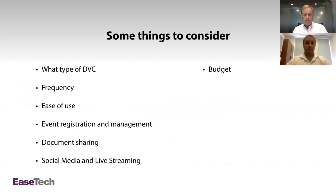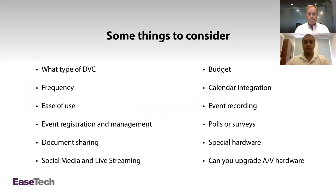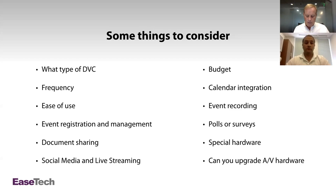There are lots of considerations when evaluating software and hardware for desktop video conferencing. There are three different types: one-on-one, group meetings, and one-to-many like a webinar. When evaluating what you need, think in those terms — maybe you need all three. We've had customers talk to us about wanting to do more interviews, so investing in a high-end system may not be necessary if you're just doing simple one-on-one interviews. Frequency is a big consideration because it helps decide how far you want to go with hardware, software, and other aspects.